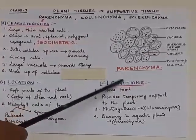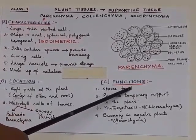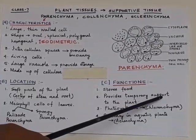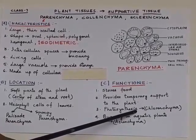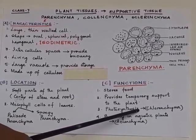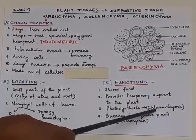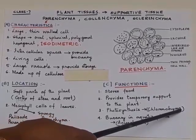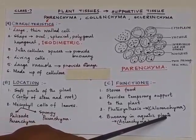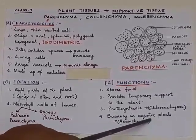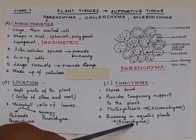In the leaves, parenchymatic cells are named as palisade parenchyma, which is just below the epidermis, and spongy parenchyma, which is present near the lower epidermis of the leaf and is loosely packed. The functions of parenchyma are: it stores food, provides temporary support to the plant, and helps in photosynthesis — those parenchymatic cells which help in photosynthesis are known as chlorenchyma. They also help in buoyancy in aquatic plants, and those cells are known as aerenchyma.